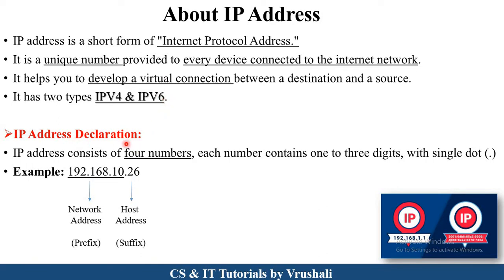First, let's understand the declaration of an IP address. Here is an example: 192.168.10.26. This is the IP address of one particular device, one particular computer. Here the first three numbers indicate the network address and the last number indicates the host address. So in the network 192.168.10, the host .26 — this PC, this device — is present. This is called an IP address.